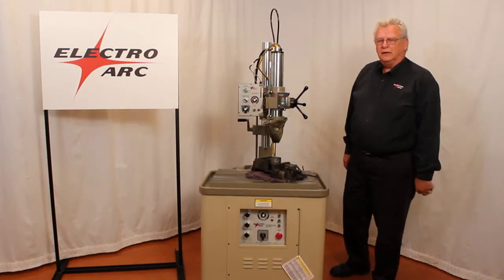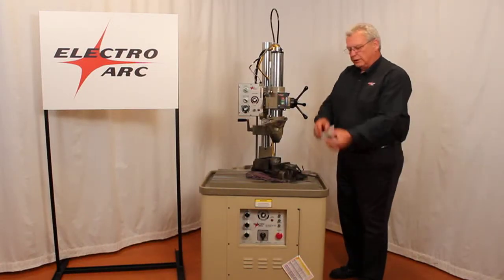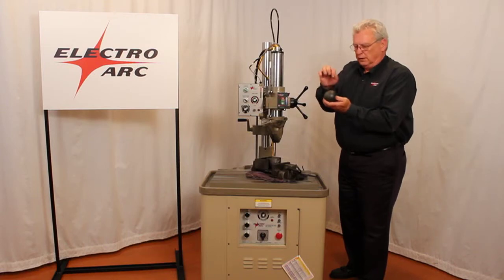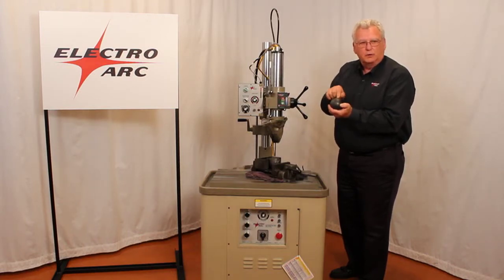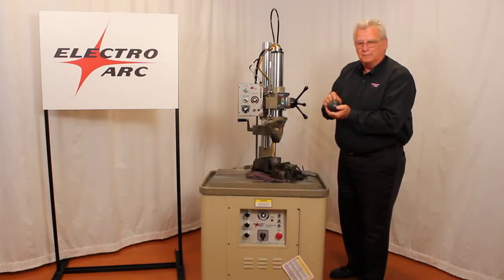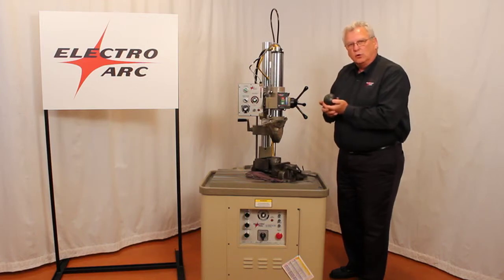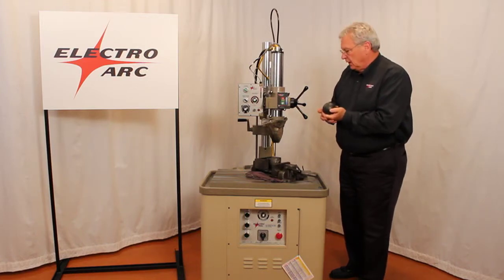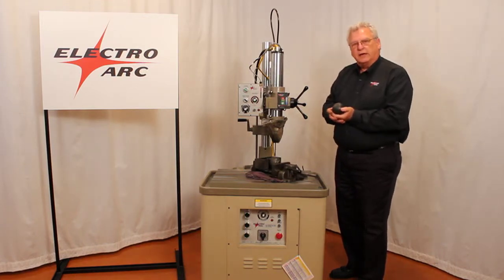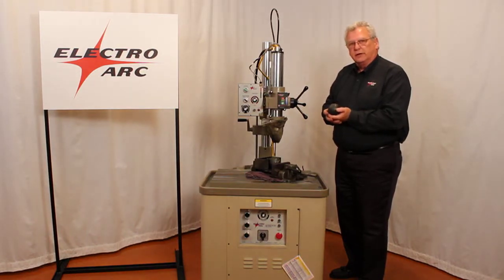Welcome to ElectroArc. In this demonstration, we're going to be disintegrating a hole down through this metal grinding media, and we're going to go to a depth of one inch. We're using an electrode that's .230 inches in diameter.